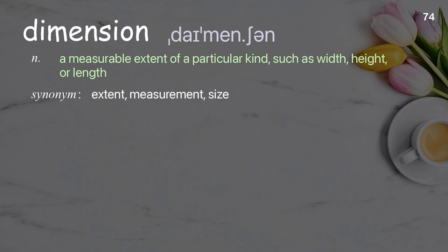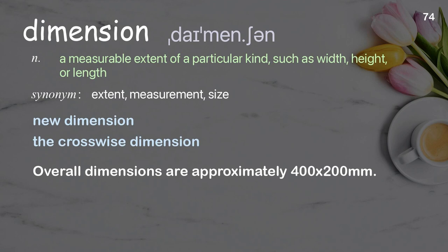Dimension: A measurable extent of a particular kind, such as width, height, or length. Examples: new dimension, the crosswise dimension. Overall dimensions are approximately 400 by 200 millimeters.